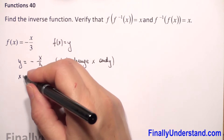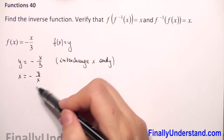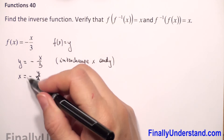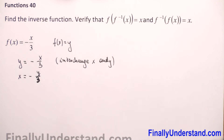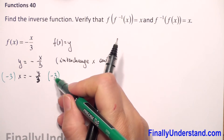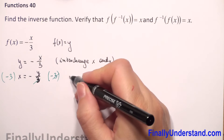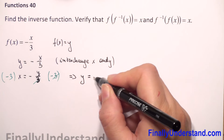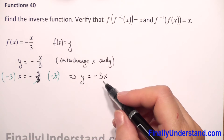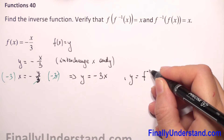So we have that x is equal to negative y over 3. Next, we will solve for y. We will multiply both sides by negative 3. We see that 3 and 3 we can reduce, and negative times negative gives positive. So we have that y is equal to negative 3x.